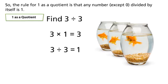So the rule for one as a quotient is that any number except zero divided by itself is one.